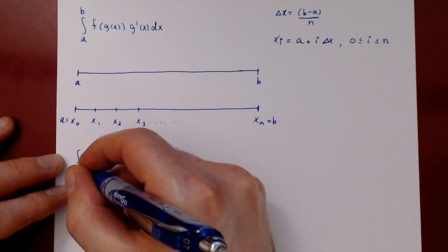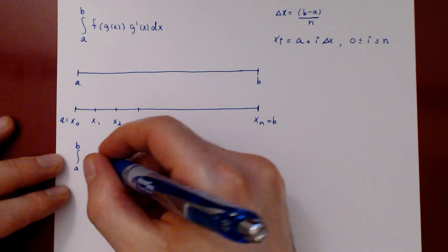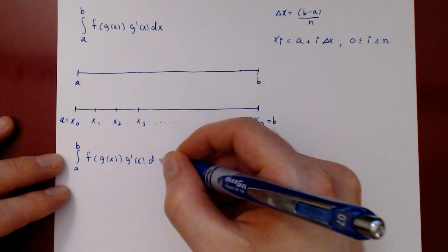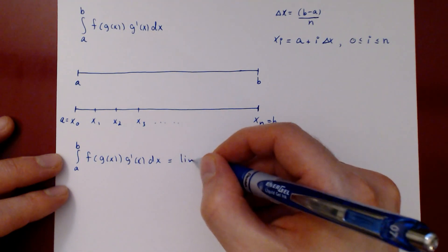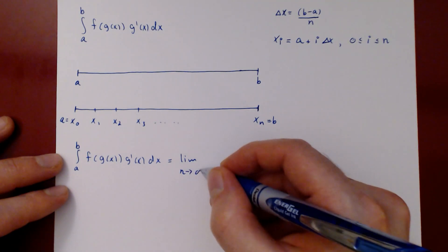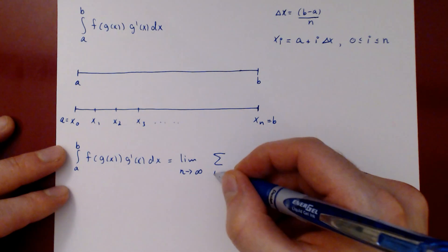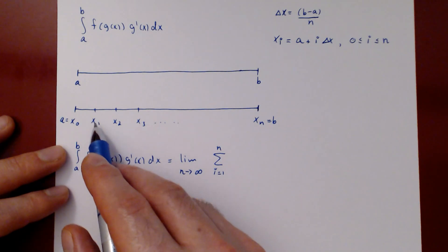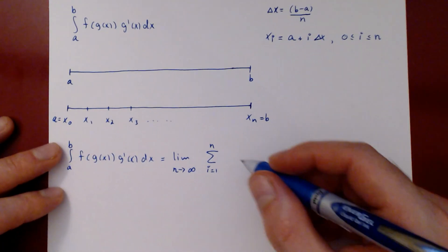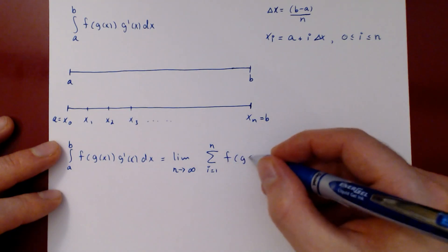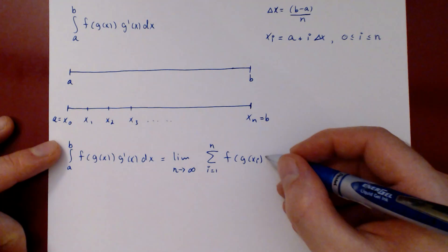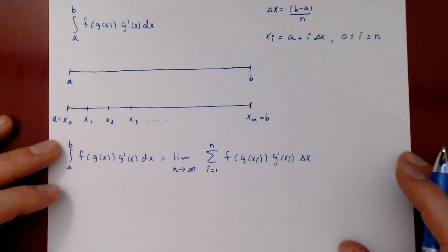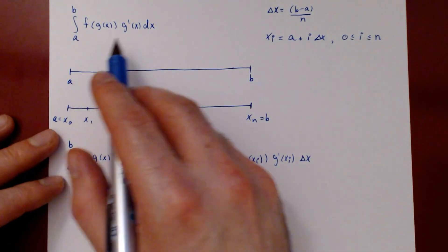The integral from a to b of f(g(x)) times g'(x) dx equals the limit as the number of rectangles tends to infinity of the sum from i=1 to n of f(g(x_i)) times g'(x_i) times delta x. This is the limit of the Riemann sum for the original integral.